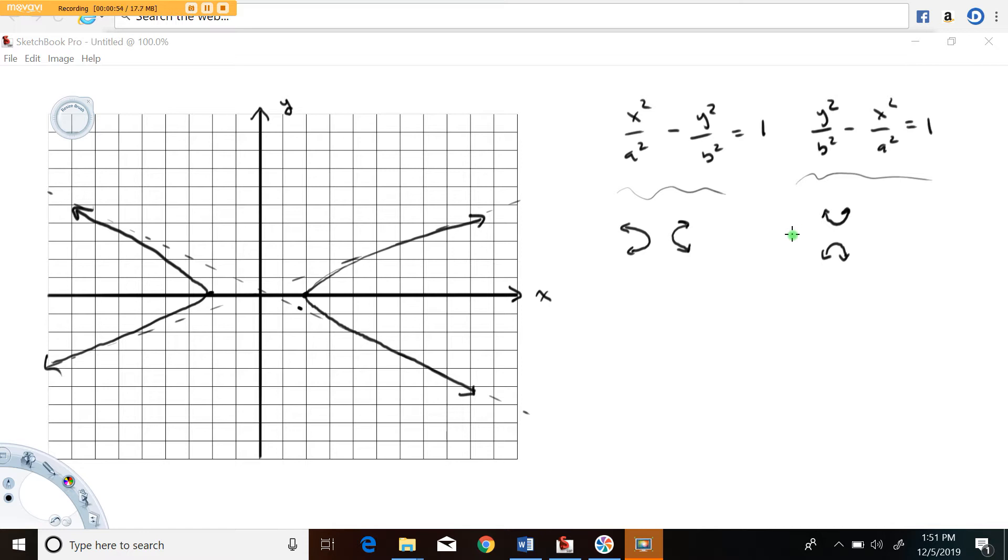And they have equations of standard form here if they're centered at the origin. And again, I'll make another video for if they're not centered at the origin. x squared over some number squared that I call a minus y squared over b squared equals one, or y squared over b squared minus x squared over a squared equals one.